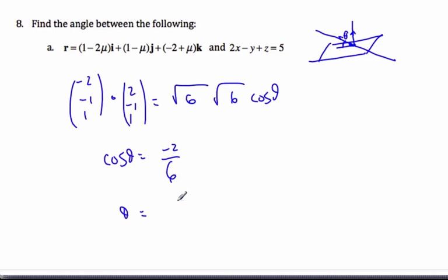And so theta is going to be arccos of negative 1/3. Let's see what I get. I get 109.47 degrees.